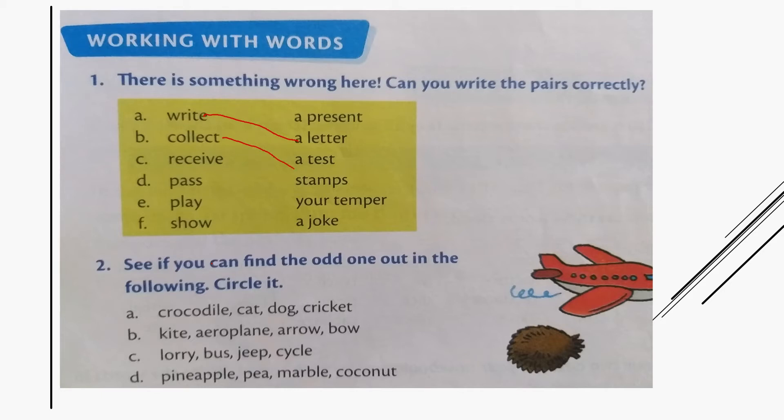Collect stamps, receive a present, pass a test, play a joke, show your temper. So here we have marked the correct pairs. Let's read them once again: write a letter, collect stamps, receive a present, pass a test, play a joke, and show your temper. Now coming to the second one.